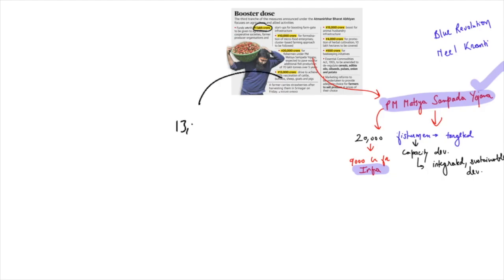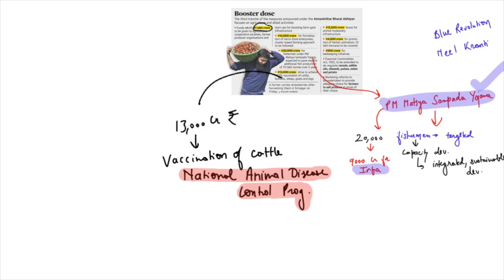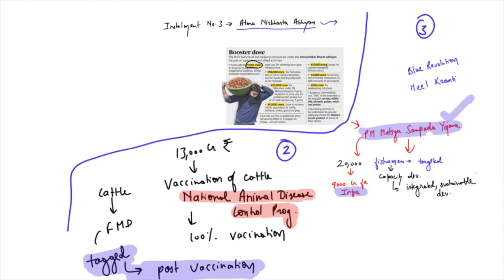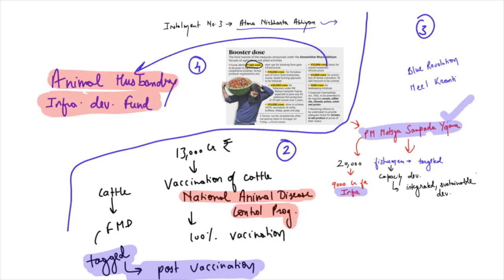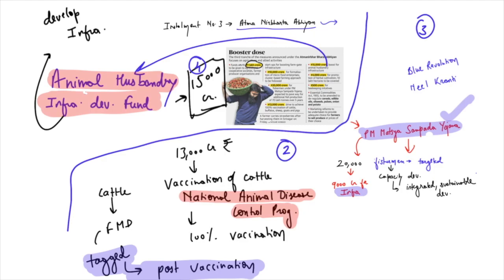Government is also giving 13,000 crore rupees for the vaccination of cattle. The National Animal Disease Control Program has been launched, which focuses on 100% vaccination of cattle, buffalo, sheep, pigs and goat. In India there is a huge problem of foot and mouth disease in cattle, due to which large numbers of cattle die every year. These cattle will be vaccinated and tagged after vaccination. Government has also decided to establish the Animal Husbandry Infrastructure Development Fund worth 15,000 crore rupees, which will aim to develop infrastructure for dairy processing, cold storage and similar things, with a main focus on developing the exportability of India's dairy products.